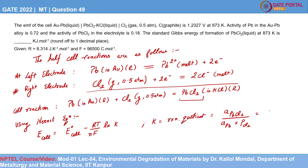From the problem, the activity of lead chloride is 0.18 and the activity of lead is 0.72. The partial pressure of chlorine gas is 0.5 atm. Therefore, K comes out to be 0.18 / (0.72 × 0.5) = 0.5.